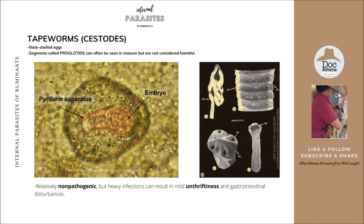Tapeworms or cestodes have thick-shelled eggs and segments called proglottids, which can often be seen in manure but are not considered harmful. It depends on the worm load, but most of the time it is relatively non-pathogenic. However, heavy infections can still result in mild unthriftiness and gastrointestinal disturbances. The cestode egg photo shows a pyriform apparatus and an embryo. Thank you to RVC for these photos.